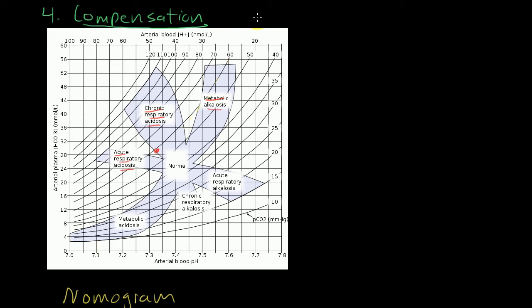The fourth step in our systematic approach is determining compensation. What you're trying to do is see if the appropriate change in your metabolic or respiratory process is in appropriate equilibrium in your body. If it's not adding up, that can give you a clue that you may be having a mixed process in addition to a single process. The easy way to determine appropriate compensation is to look at a nomogram. If you know your pH, your bicarbonate value, and your PCO2 values, you can look on the nomogram and determine if you're in the right place or if you have a mixed process going on.